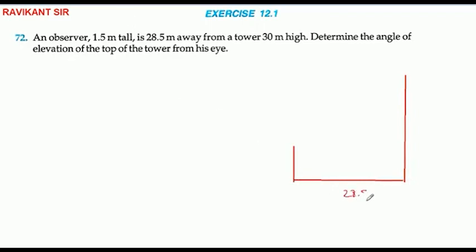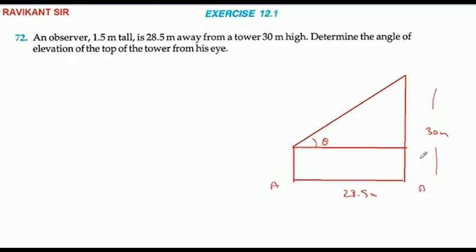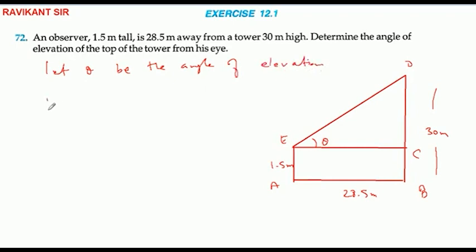Here is the diagram. The total tower height is 30 meters, labeled as A B C D. Let theta be the angle of elevation of the top of the tower from his eye.